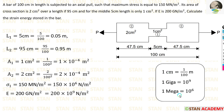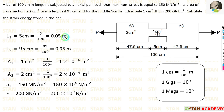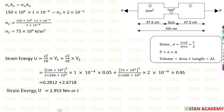Mega means 10 power 6, so we can apply that. Young's modulus E is given as 200 giga newton per meter square, and 1 giga equals 10 power 9. Now we have converted all values in terms of meter. The strain energy formula, derived in previous videos, is U equals sigma squared by 2E into V.